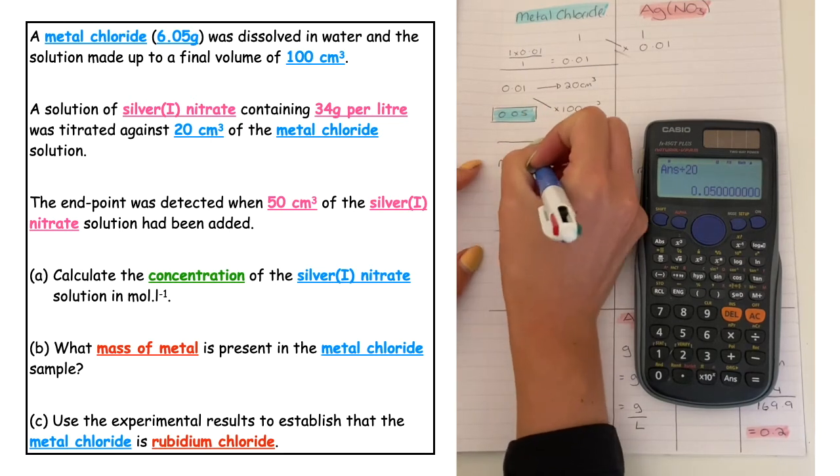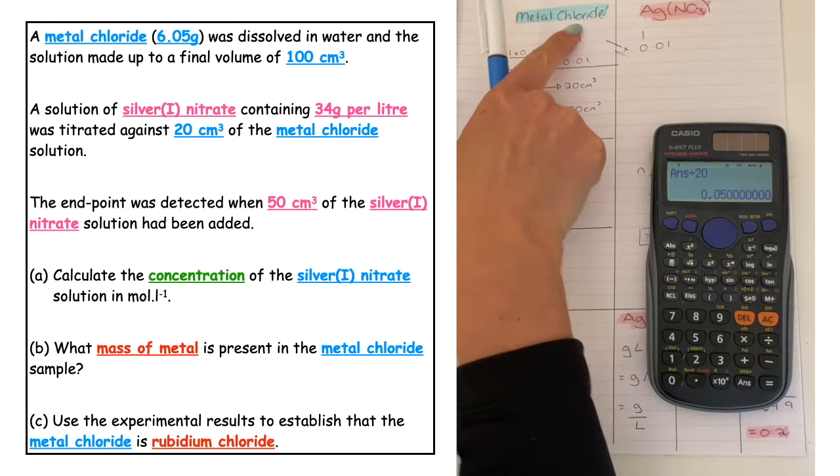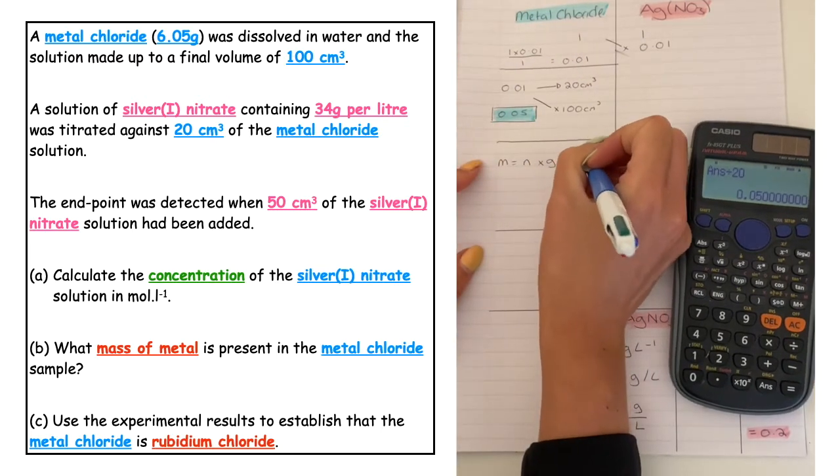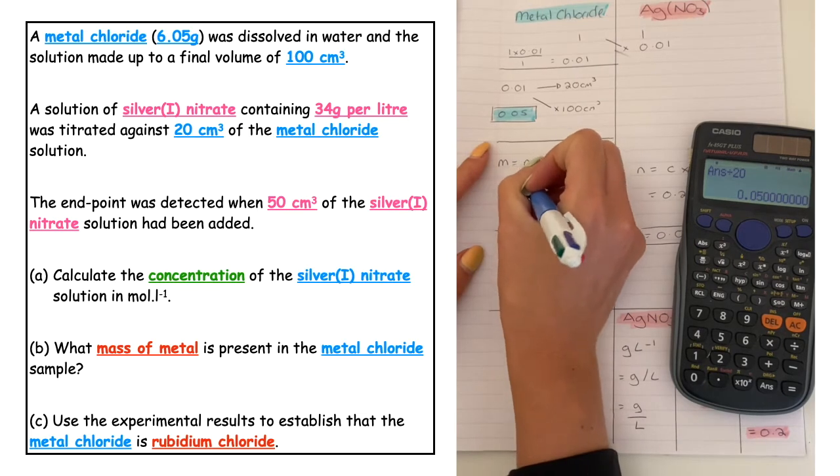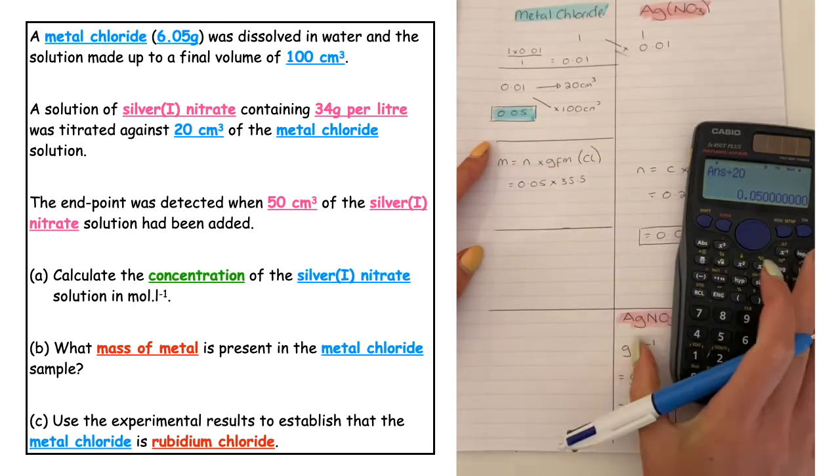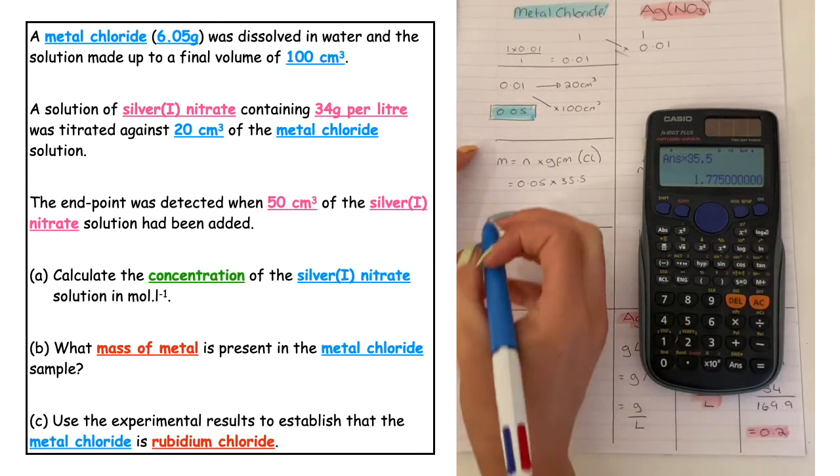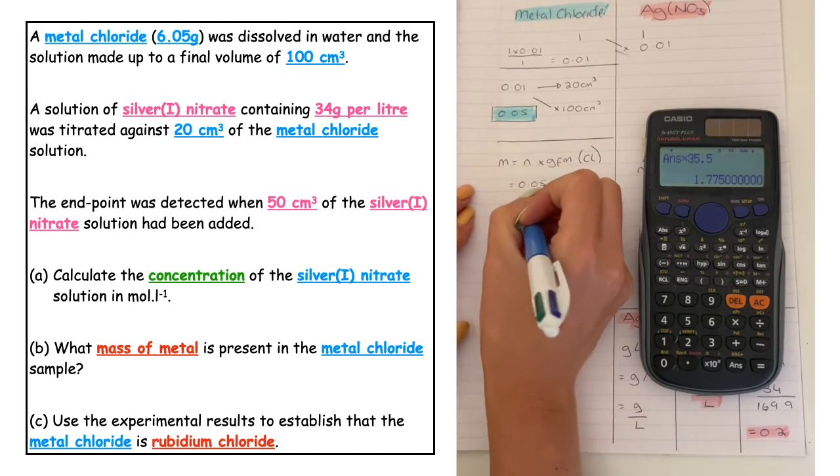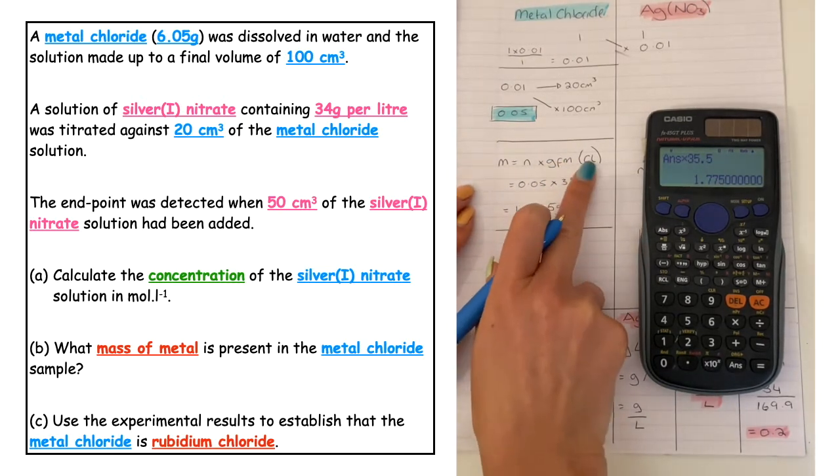m is equal to n times GFM. But what we do know is it's got chlorine, so we're going to do it for the chloride ion. The number of moles is 0.05 times by 35.5 for chlorine, which comes in at 1.775 grams for our chloride.